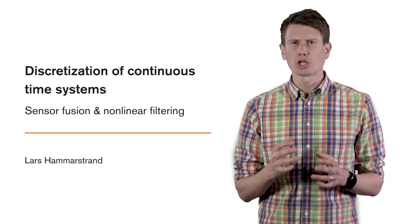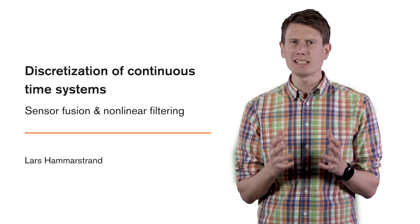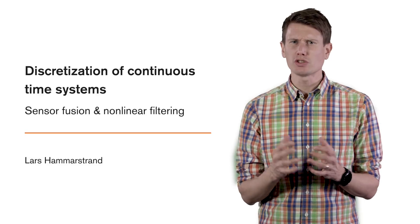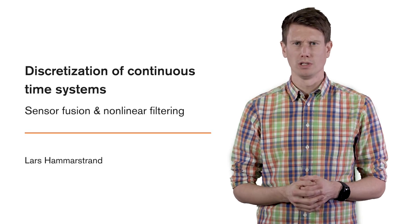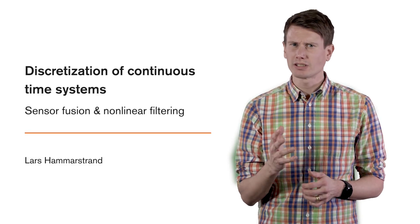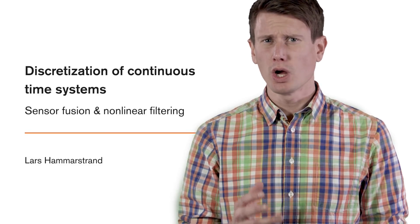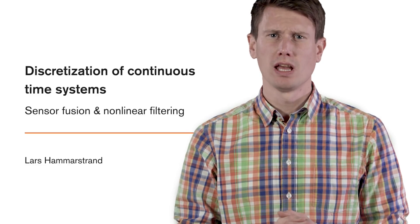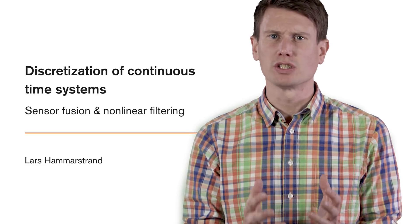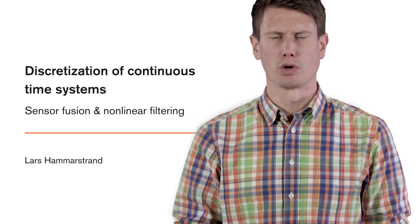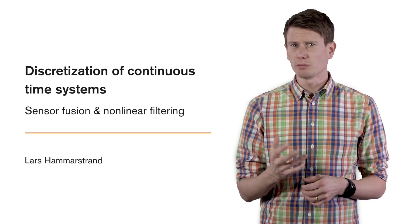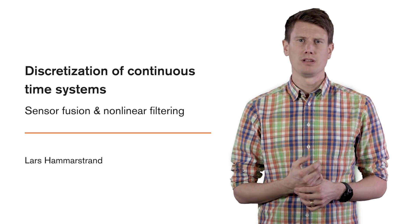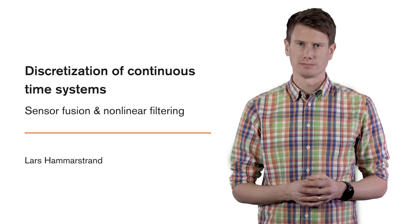A common strategy in order to come up with a discrete time motion model is to first design a continuous time motion model and then discretize that one. In this video, we will present two useful results that will enable us to discretize continuous time motion models. We will look at both an approximative method and an exact method for an important model family.